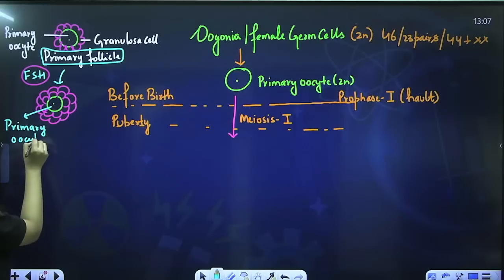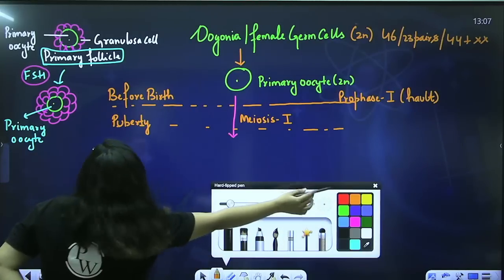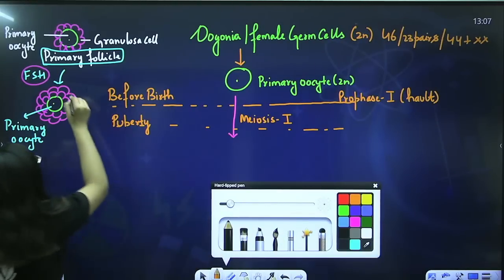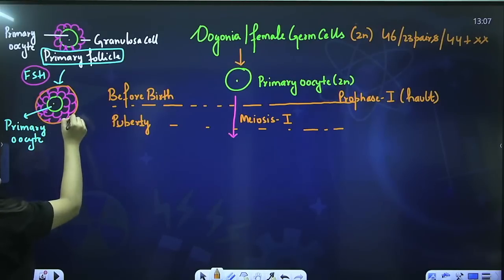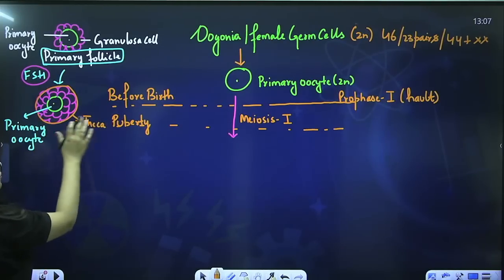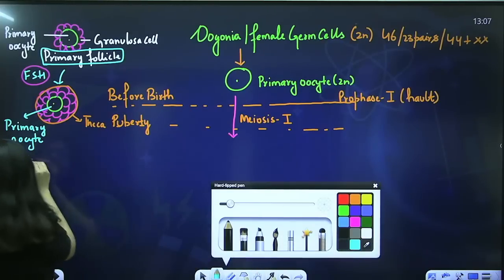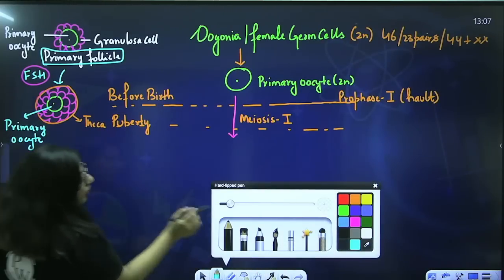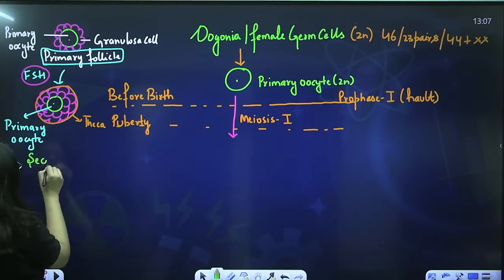Apart from more granulosa cells, the secondary follicle has also developed a layer around it called the theca layer. The structure is now known as the secondary follicle.